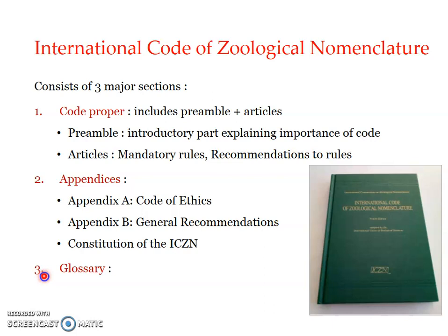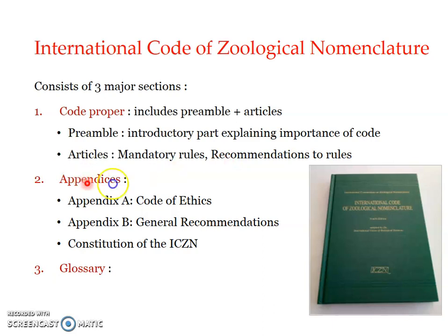The International Code of Zoological Nomenclature — the hard copy cover page looks like this. The book contains three major sections: Code Proper, Appendices, and Glossary. The Code Proper includes the Preamble and Articles. The Preamble is an introductory part explaining the importance of the code. The Articles include mandatory rules; recommendations to the rules are listed here.